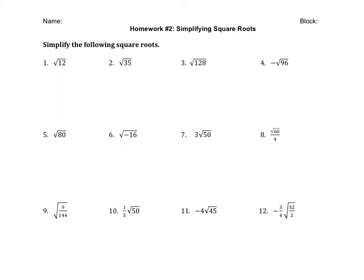For some of them later on, you may have to do multiple steps. So for example, if we look at number 8, we have the square root of 60 over 4. So you need to figure out what is the largest perfect square that goes into 60 evenly, and you can use that to break down the problem. But then you will have to simplify it with the 4.